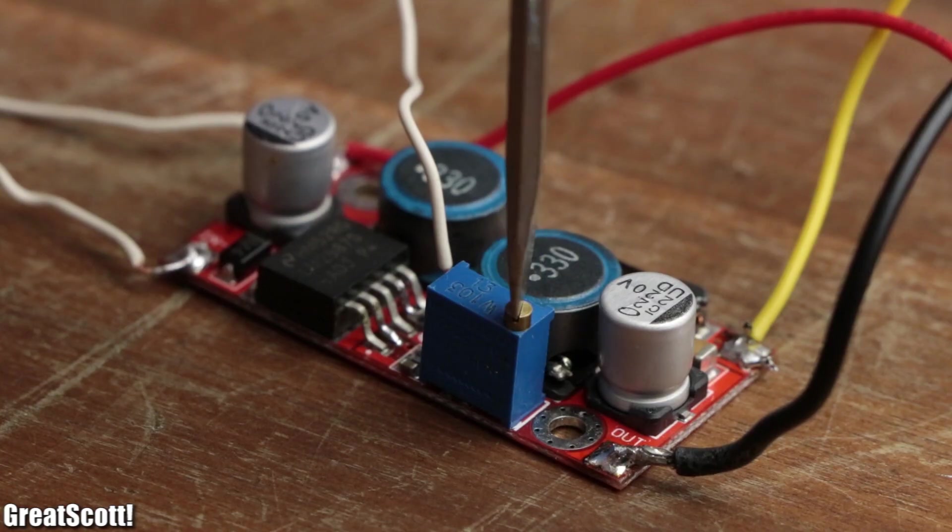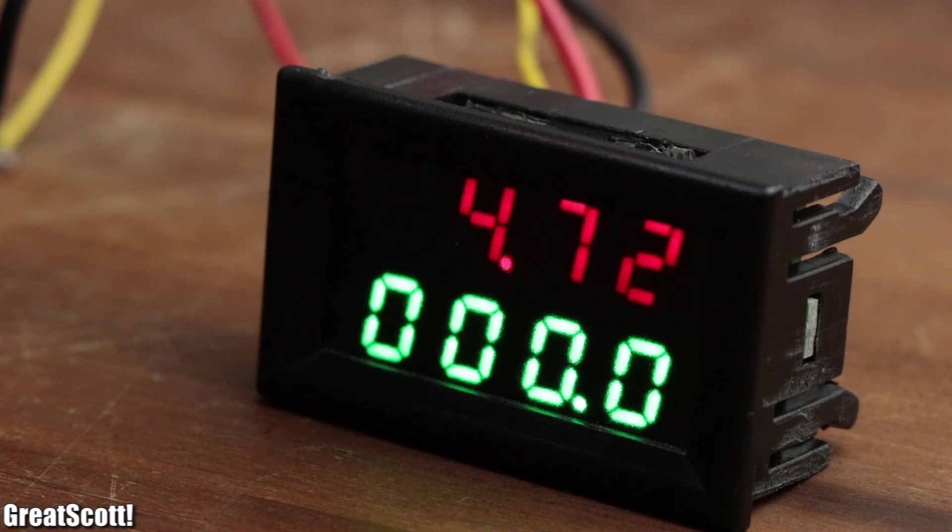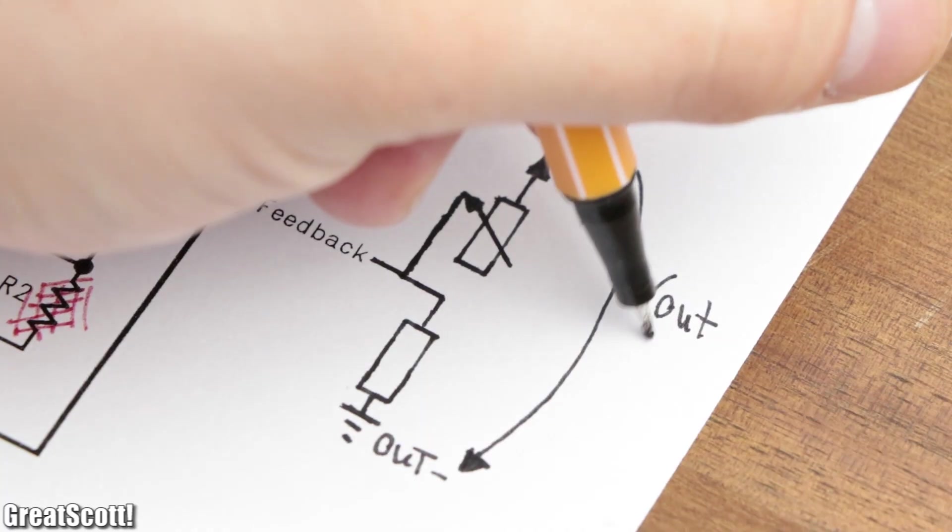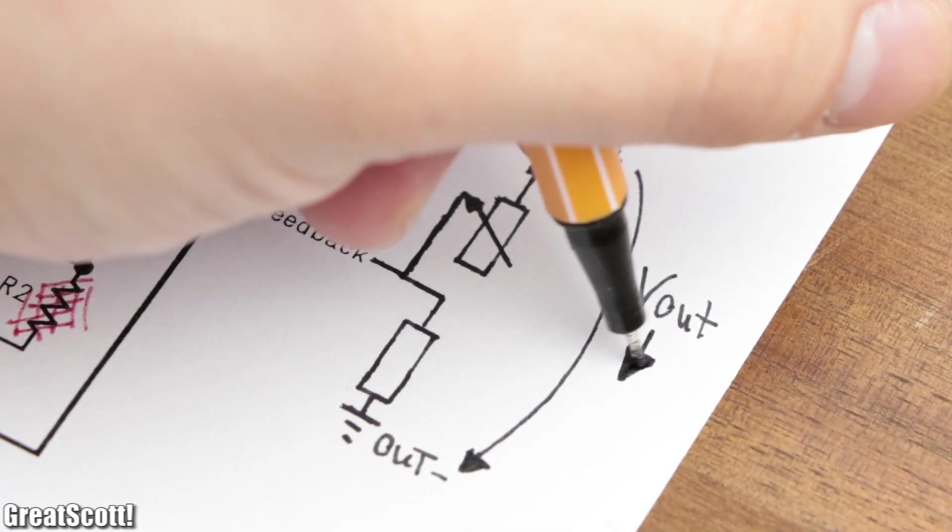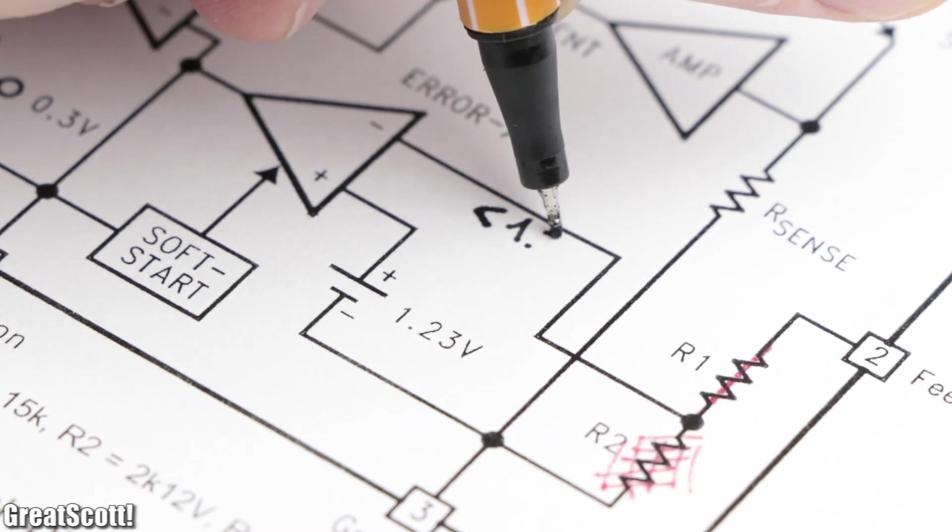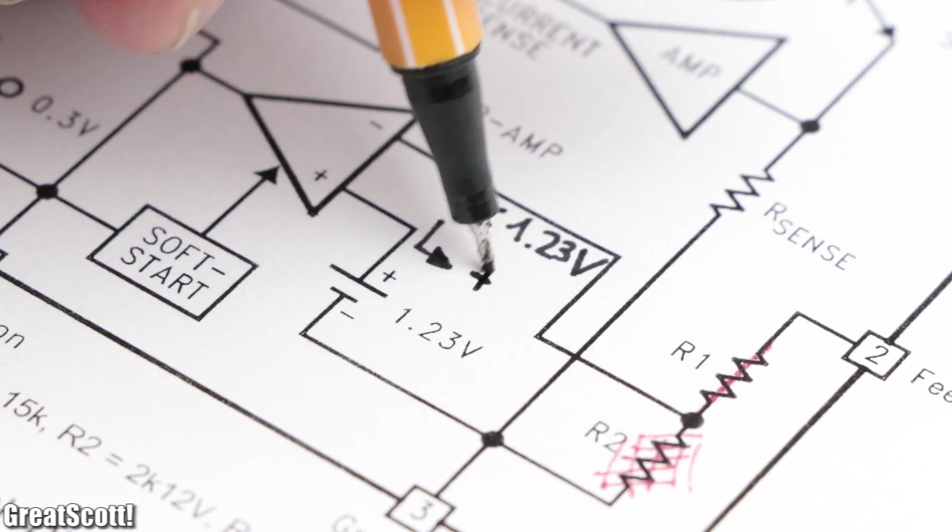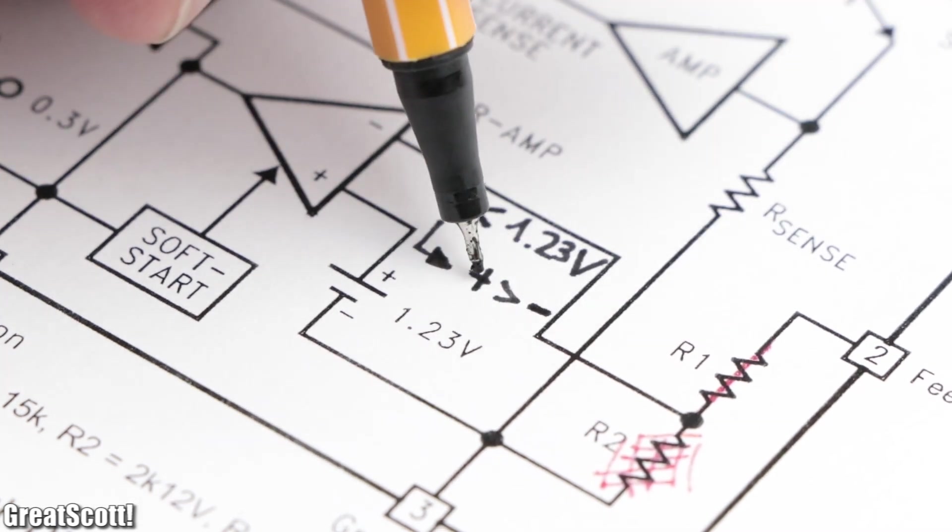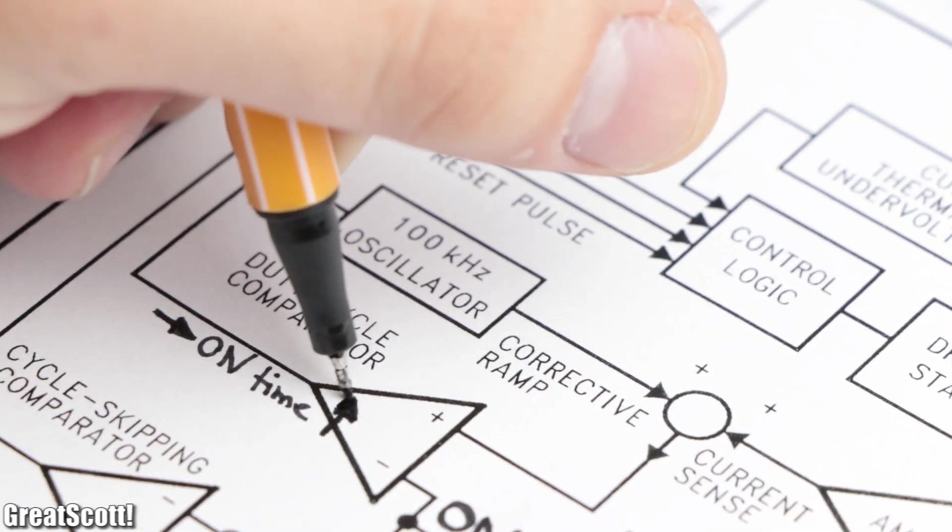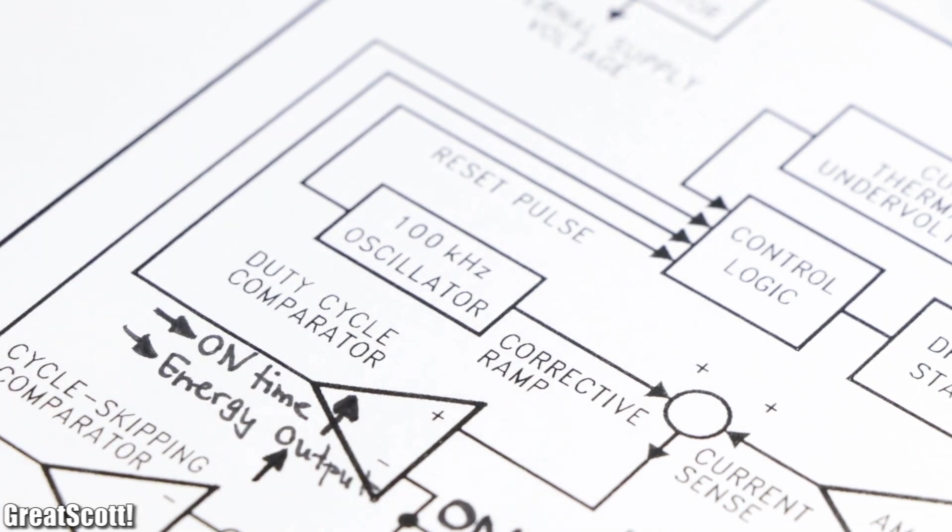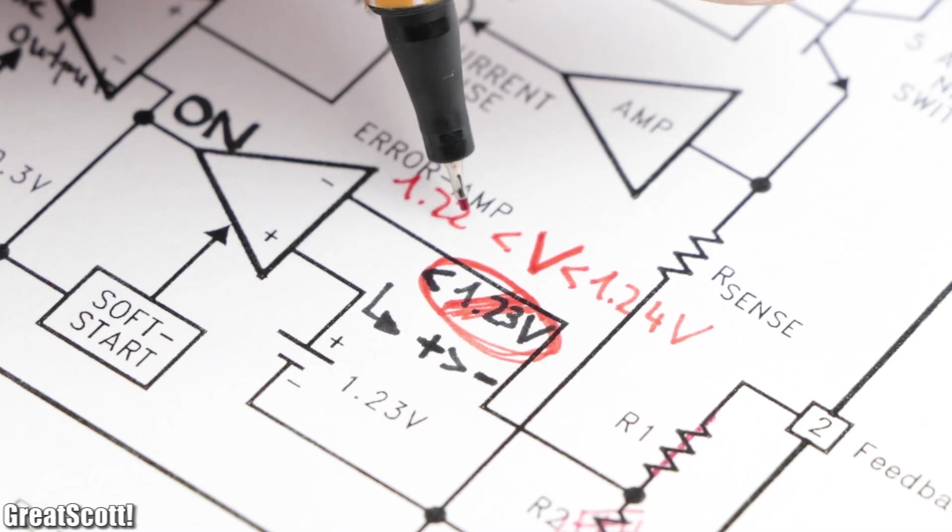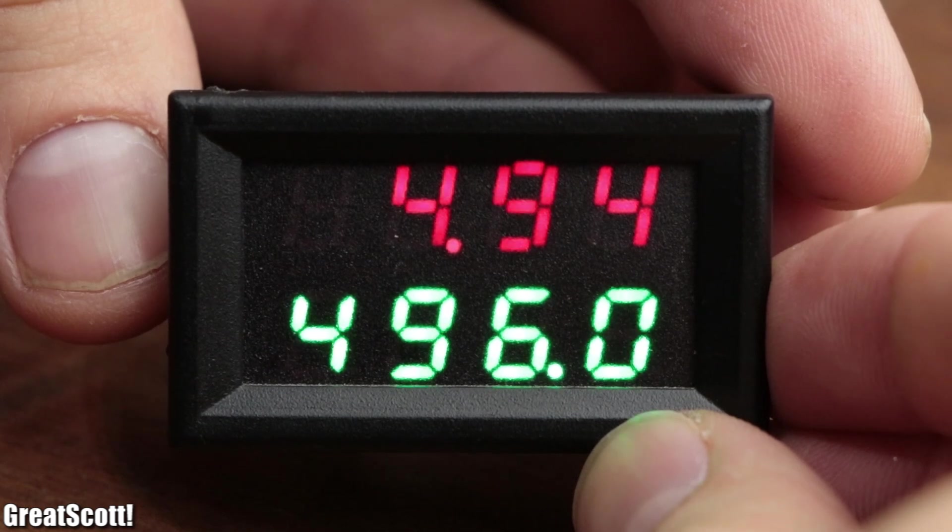To understand how this feedback system works, let's imagine we just had an output voltage of 5V and are now about to attach a big load. Now due to the big energy demand, the output voltage would collapse, which means that the feedback voltage would collapse as well. But since the 1.23V on the non-inverting input now has a higher voltage potential than the feedback voltage on the inverting input, the output of the op amp turns on, which tells the IC to increase the on time of the switch to increase the output energy. It does that until the feedback voltage is again close to the 1.23V and swings around this value to keep the output voltage relatively stable.